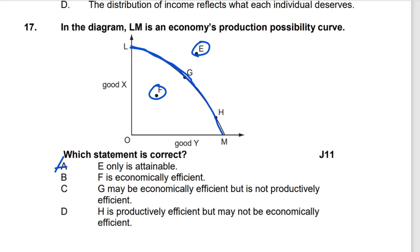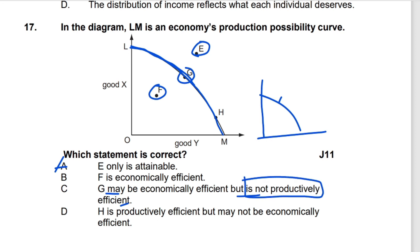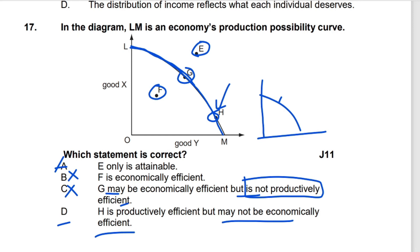Option B: F is economically efficient — F is below the PPC, meaning unemployment of resources, so it cannot be economically efficient. Option C: G may be economically efficient but not productively efficient — since G is along the PPC, it is productively efficient, making this option incorrect. The remaining option is D: H is productively efficient — since H is along the PPC — but may not be economically efficient overall, because economic efficiency requires both productive and allocative efficiency. If allocative efficiency is not achieved at H, it may not be fully economically efficient. Option D is the correct answer.